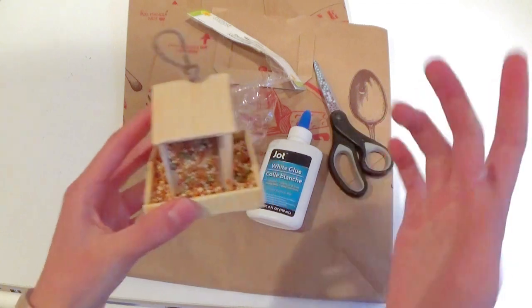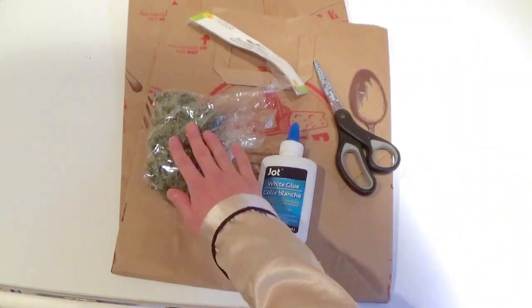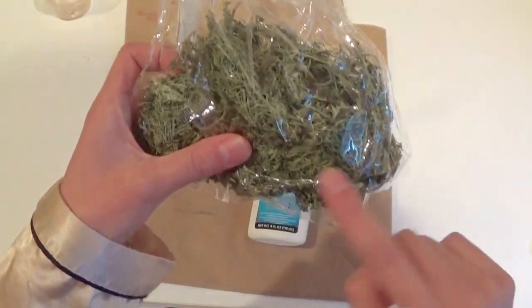Now we're going to make a tree to put this birdhouse in. You're going to need a brown paper bag or two, scissors, glue, moss and water. You can get moss at the dollar store.